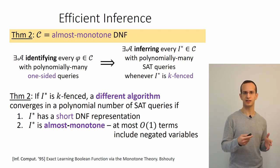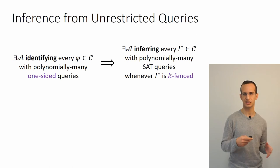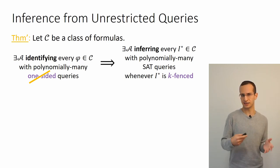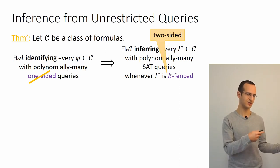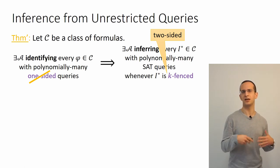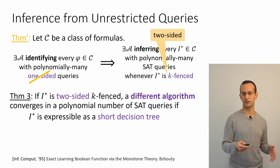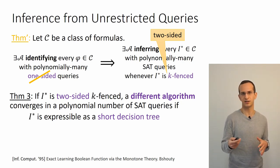We also have another variant of this transformation from exact learning to invariant inference that can do without the restriction that the algorithm performs only one-sided queries. That requires the invariant and transition system to satisfy a stronger, two-sided version of the fence condition. Using this result, applied to a different algorithm by Beshuti, we can prove there is an invariant inference algorithm that successfully infers any invariant with a short decision tree representation as long as it satisfies this two-sided fence condition.